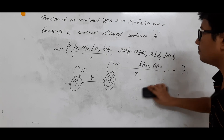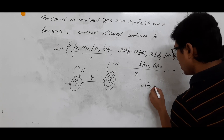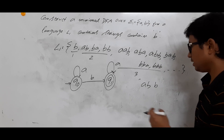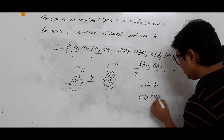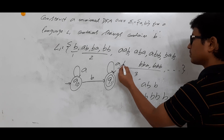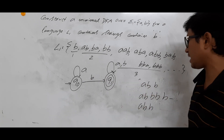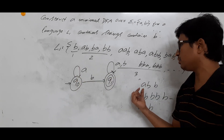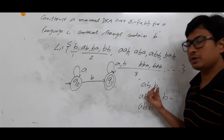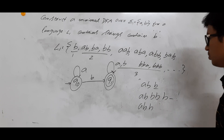Now what about reading b after already being in q1? Strings like abb, abbb, or a followed by any number of b's should be accepted. From q1 on b you go to q1 itself. If you trace abb: q0 on a goes to q0, q0 on b goes to q1, q1 on b goes to q1 — it reaches the final state and is accepted.